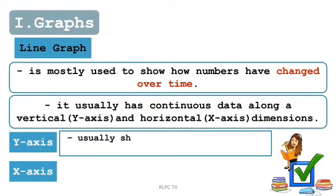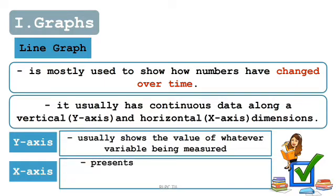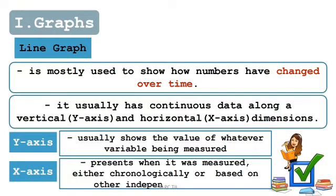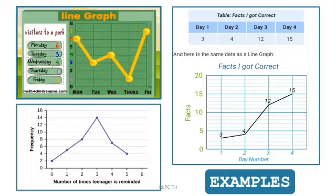The y-axis usually shows the value of whatever variable being measured, while the x-axis presents when it was measured, either chronologically or based on other independent variables. In analyzing a line graph, be observant with the title, the labels, the horizontal and vertical scales, the points or x and y-axis, and the line segment.